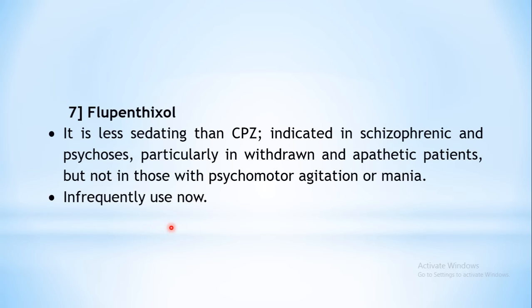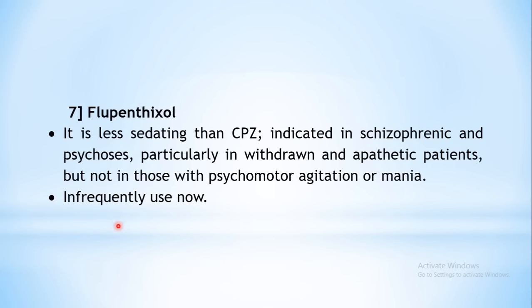The next class is thioxanthenes, with only one example: flupenthixol. Compared to CPZ, it is less sedative and produces less drowsiness. It is indicated in schizophrenia, psychosis, or withdrawn and apathetic conditions — where the person lacks social involvement or initiative. However, it should be avoided in psychomotor agitation or mania, and is not a very popular drug overall.